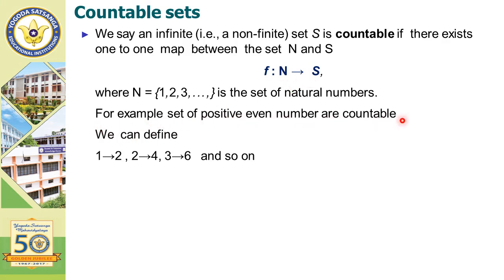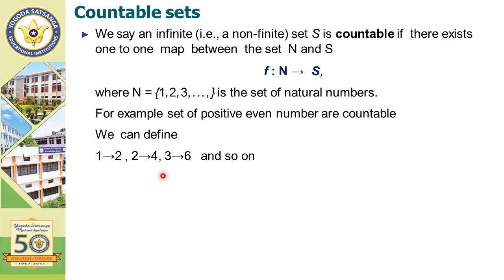For example, the set of positive even numbers is countable, since it has a one-to-one map between the two sets. The first positive even number is 2, and its corresponding natural number is 1. The second even number is 4, and its corresponding natural number is 2. The third even number is 6, and its corresponding natural number is 3. In this way, 8 will be the fourth even number. We can count every element in the set of even numbers, and all elements have a unique corresponding natural number.